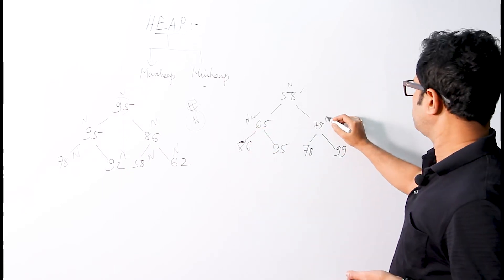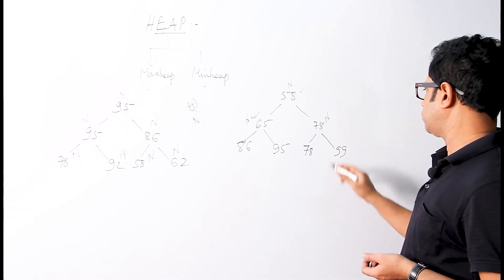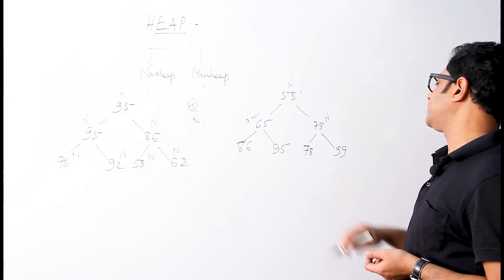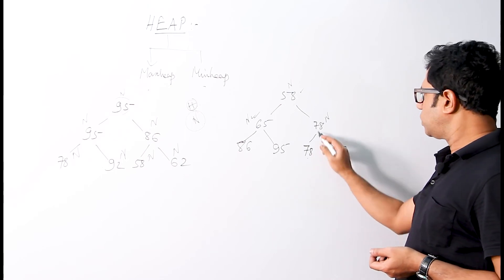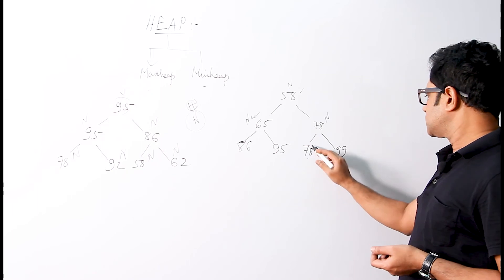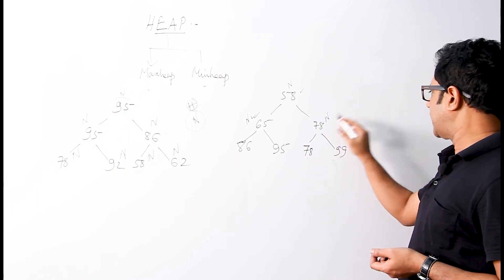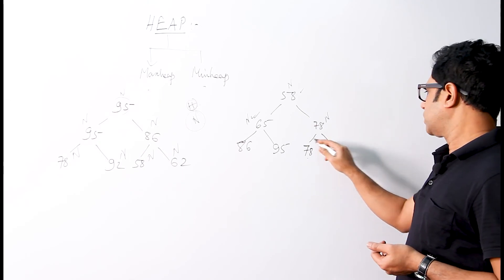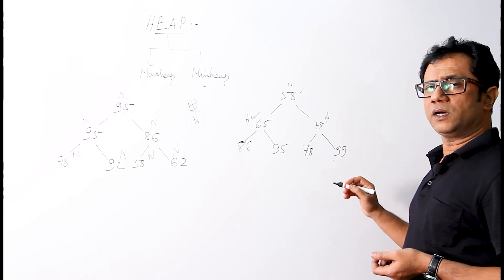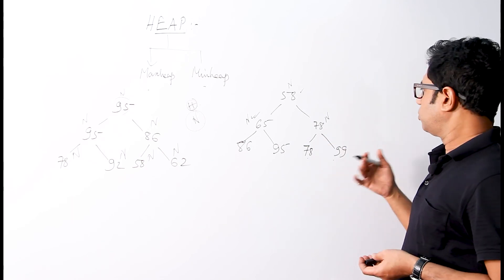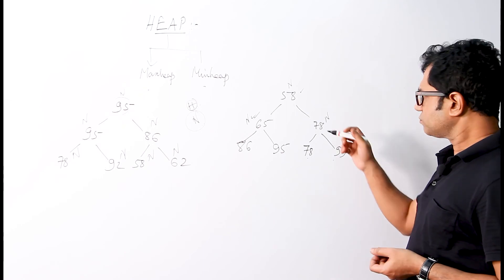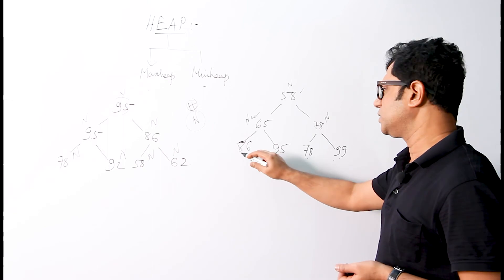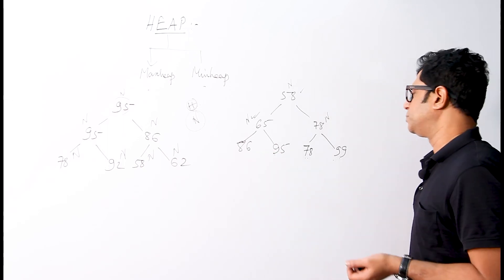For node N with value 78, its two children have values 78 and 99. The value 78 is equal to the node value, and 99 is greater, so this node also follows the Min Heap rules. For the leaf nodes 86, 95, 78, and 99, since they have no children, they can also be considered part of the heap. So this is a Min Heap.